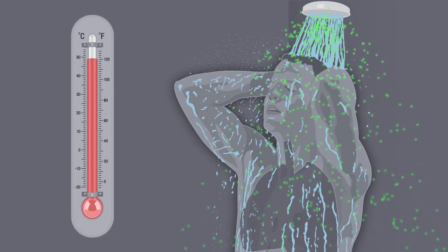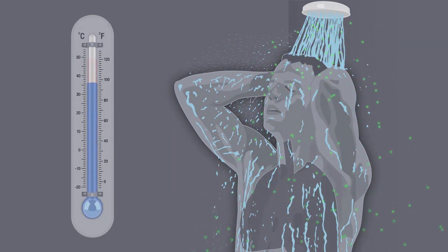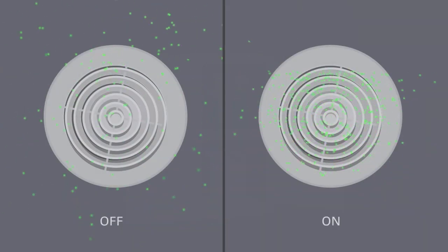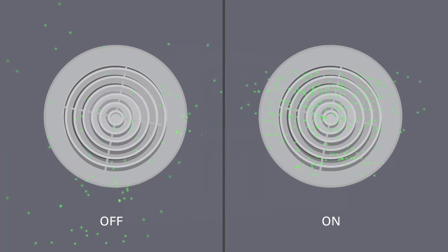If drinking water is contaminated with TCE, take shorter, cooler showers to reduce TCE vapors. Always use the vent fan in your bathroom and laundry room.